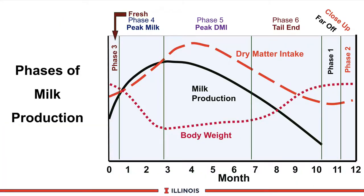Looking at the total scheme of things, we see the three curves again. The dry matter intake curve is illustrated here on the yellow curve. The key point to notice is that it lags behind the milk production curve. Therefore, cows produce more milk before we reach peak dry matter intake.